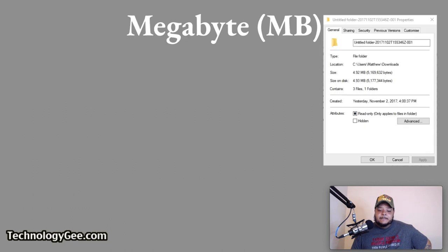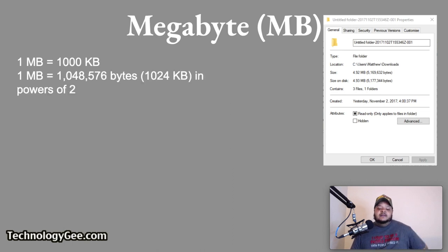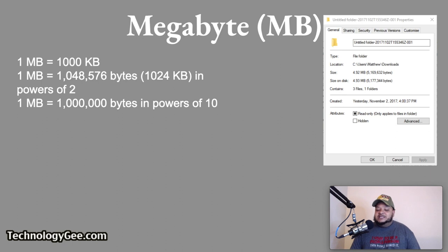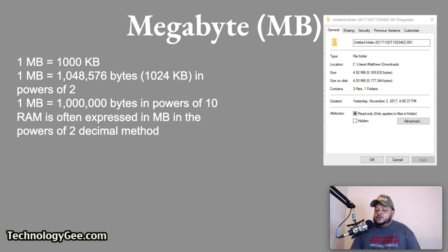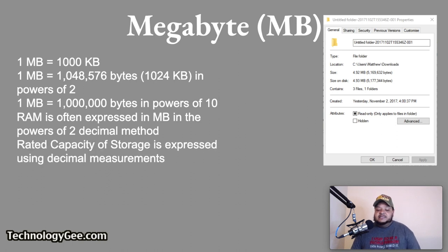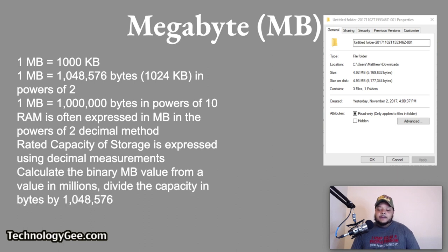A megabyte is equal to 1,000 kilobytes and precedes the gigabyte unit of measurement. Depending on the device, the megabyte is either 1,048,576 bytes — which is 1,024 kilobytes in powers of 2 — or 1,000,000 bytes when expressed in powers of 10. RAM and cache memory are often expressed using powers of 2, whereas rated capacity of storage drives uses decimal measurements. To calculate the binary megabyte value, divide the capacity in bytes by 1,048,576.